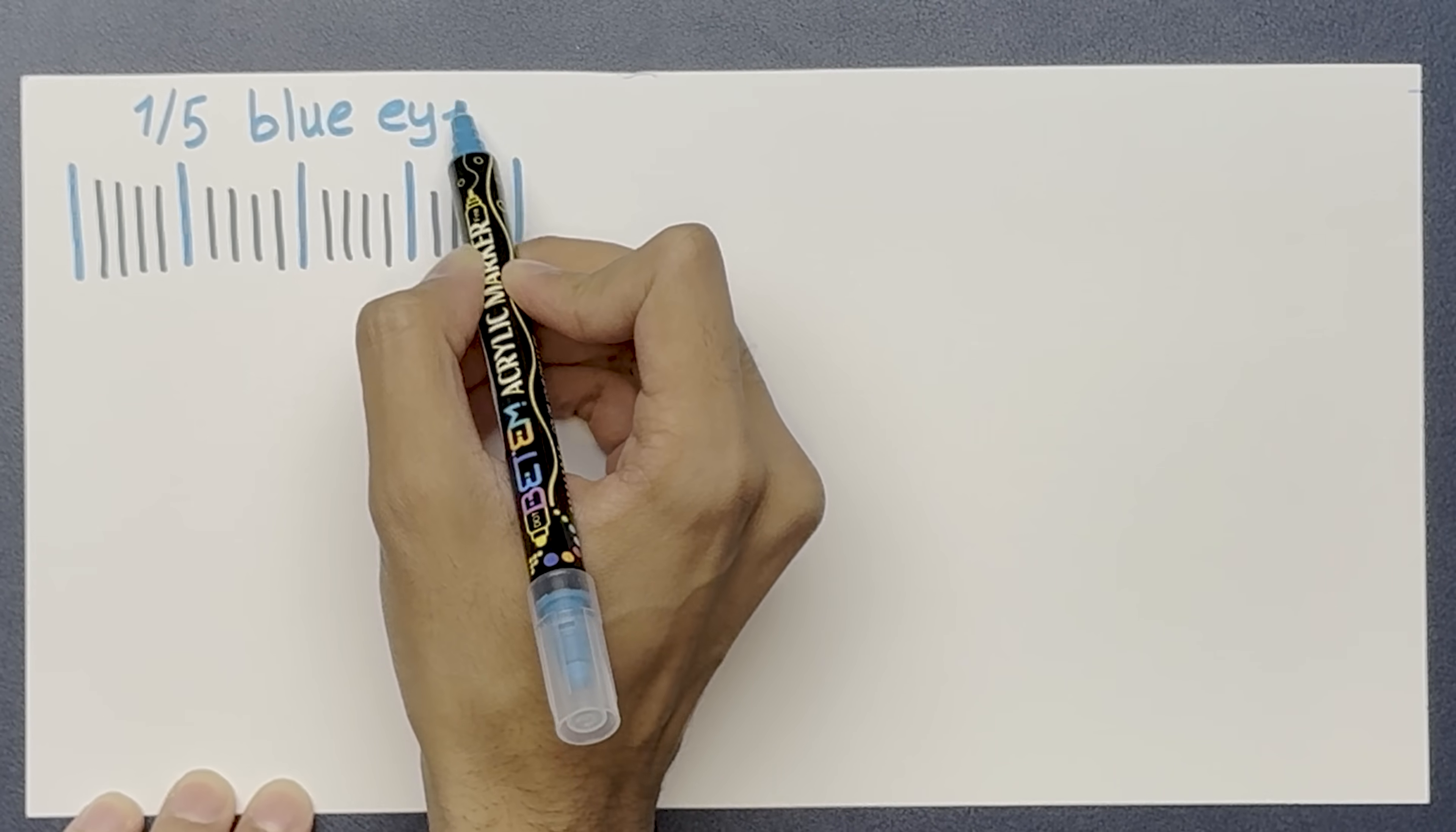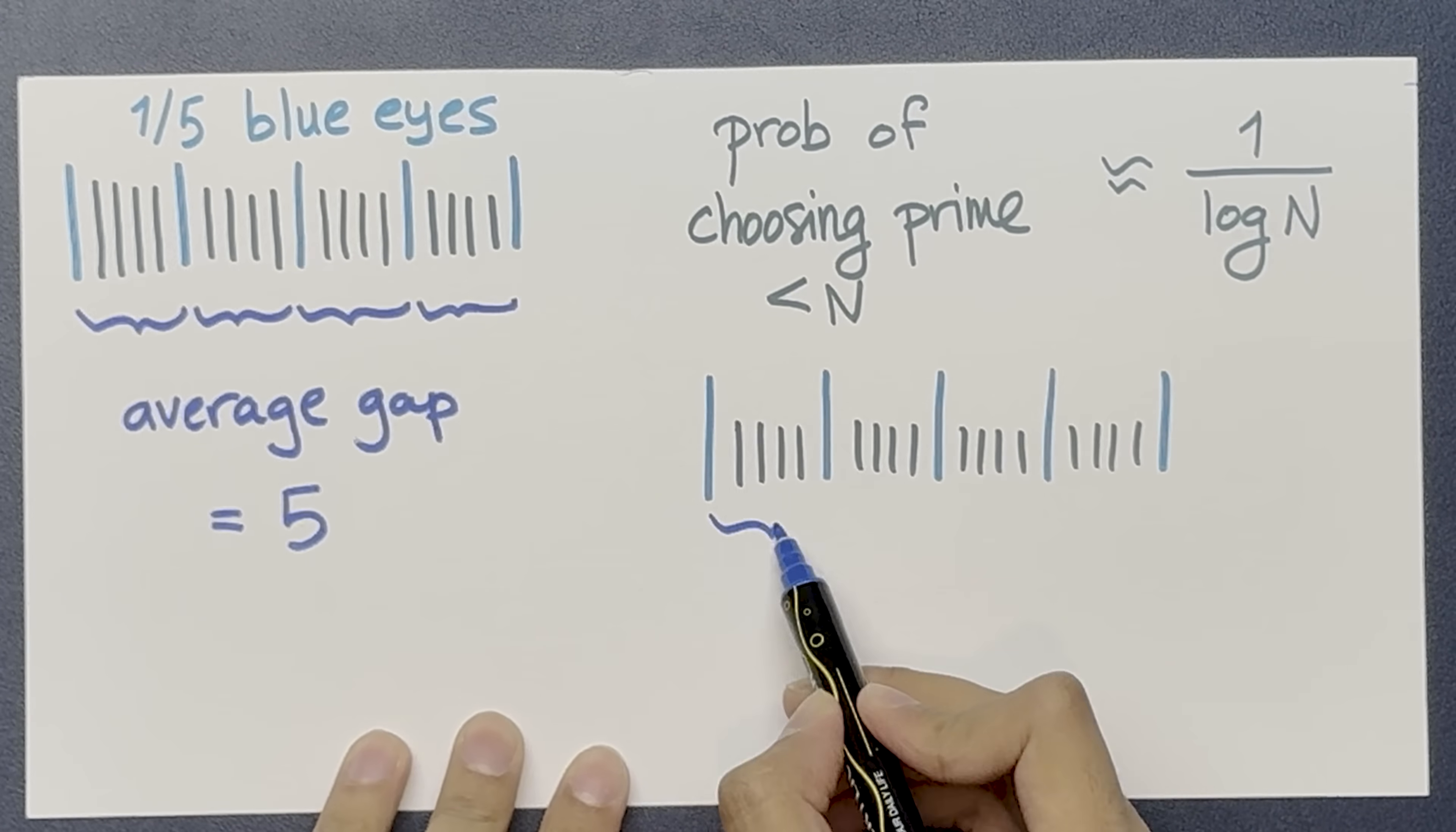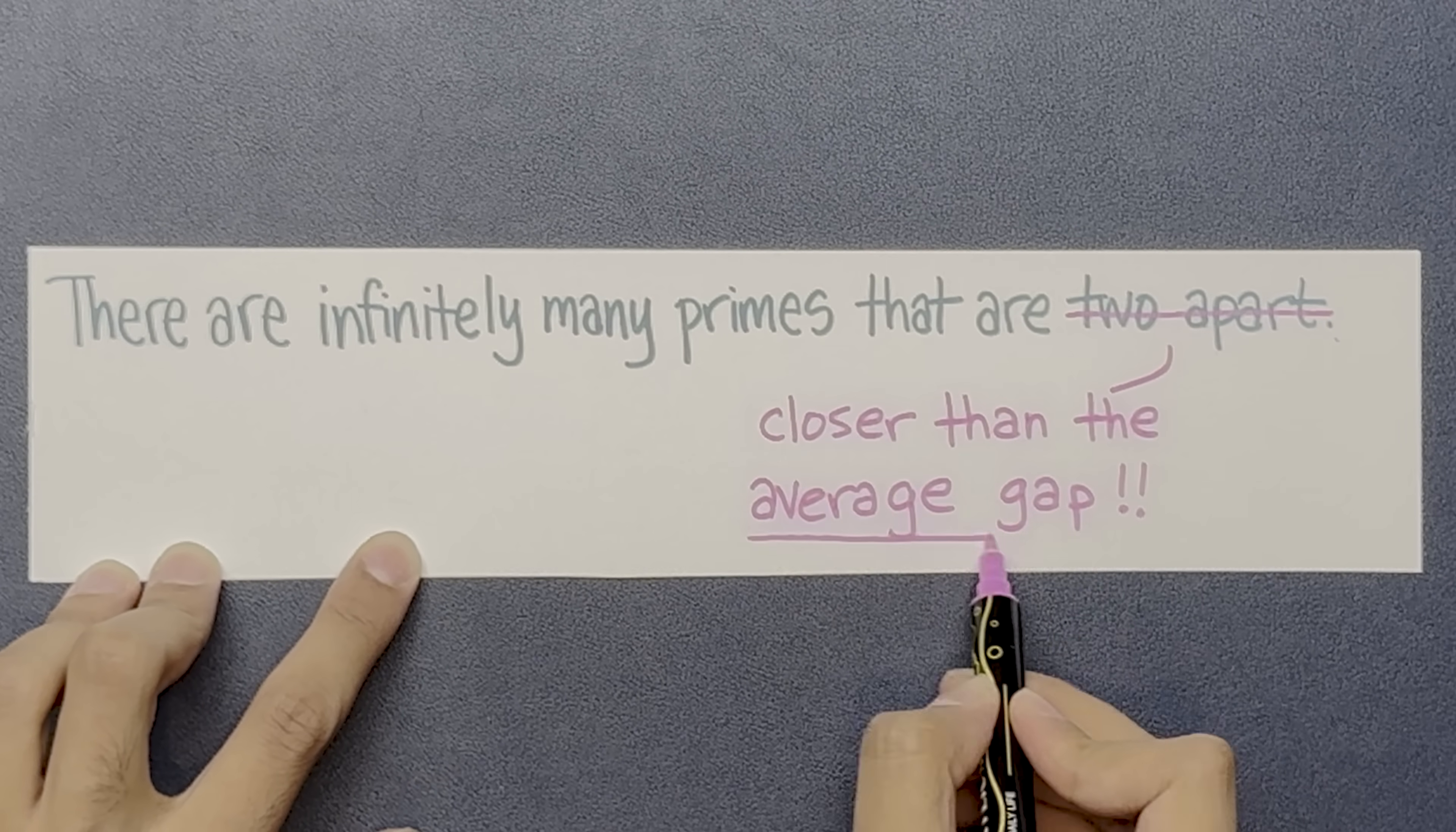Here's an analogy to understand this. Suppose you have a lot of people standing in a line, and you know that 1 fifth of them have blue eyes. If the people with blue eyes are evenly spaced in the line, you'd expect that the average gap between people with blue eyes is 5. The same logic works for the primes. The probability of choosing a prime less than n is around 1 over log n. So if you assume that the primes are evenly spaced in the number line, the average gap between primes less than n is around log n. The twin prime conjecture says that there are infinitely many pairs of primes that are two apart. This is very hard, so let's try proving something easier. Let's try showing that there are infinitely many pairs of primes that are closer together than the average gap.